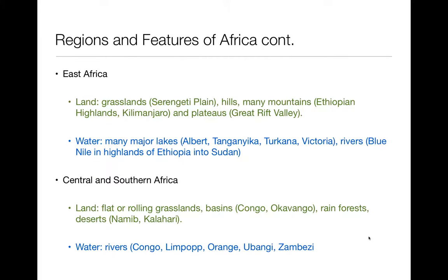The other two areas are East Africa and Central and Southern Africa. In East Africa, there are a lot of grasslands, hills, and many mountains. There's also the Great Rift Valley, which we'll explore more in a moment. The Serengeti Plains are in East Africa — that's where those grasslands and plains are. If you've ever seen a movie about Africa, they usually focus a lot on that. Not so much the rainforest, sometimes the desert, but a lot of the time it's always about the grasslands.